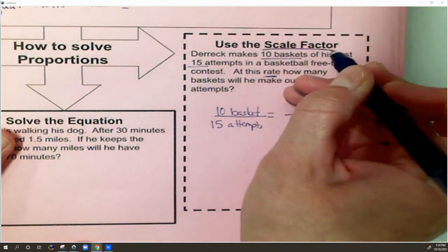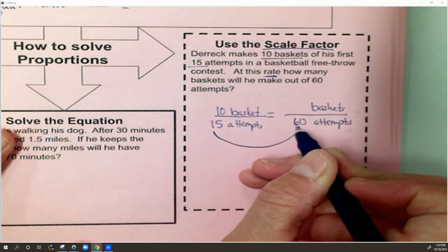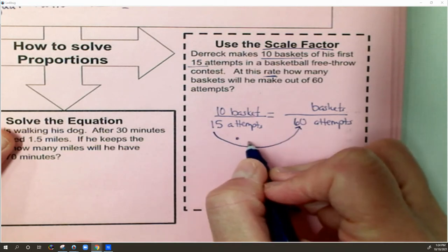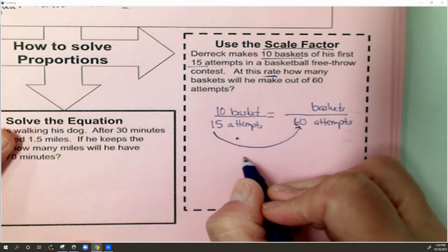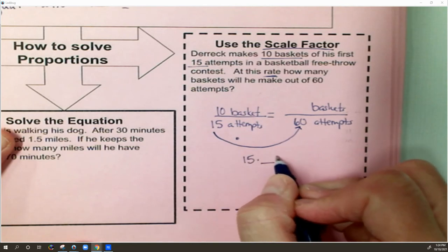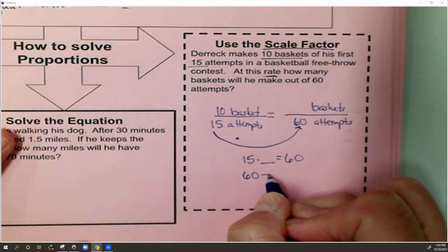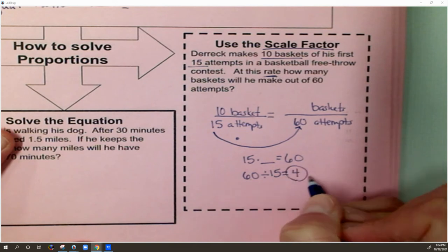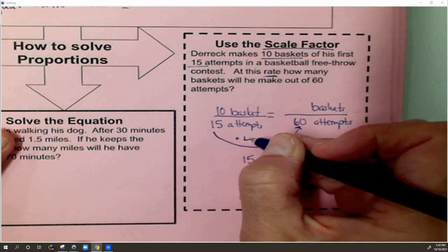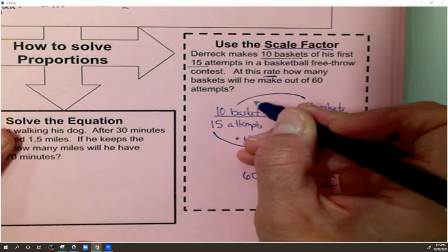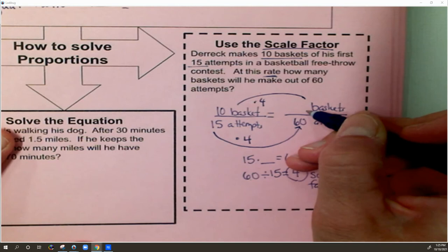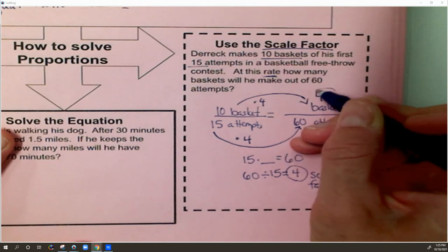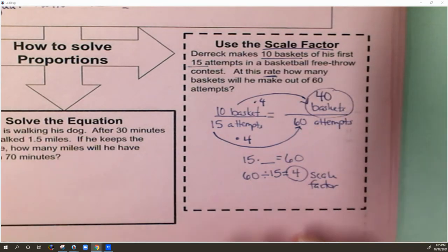So for this to be a scale factor method, that means I need to find the scale factor. And the scale factor is the number I multiply by. So 15 times something is 60. To find that something I divide. So I divide with my fact family, and 60 divided by 15 is 4. So 4 is the scale factor. It's the number I multiply by. So I'm going to multiply 15 times 4, and whatever I do to the bottom, I do to the top, and I multiply 10 times 4. So that's how I get 40 baskets is my answer. So that's the scale factor method.